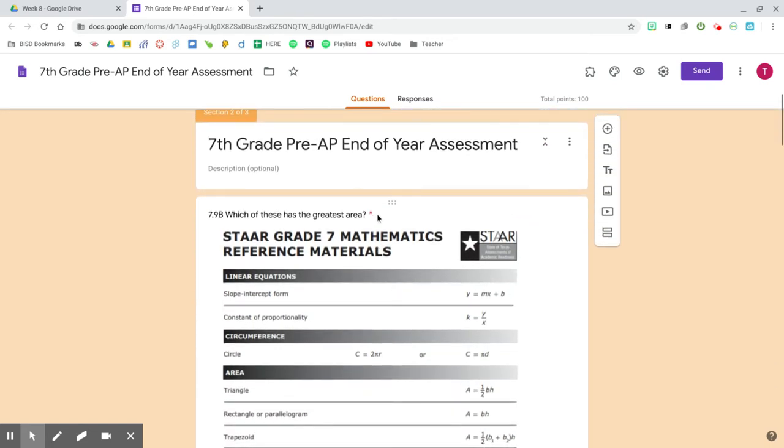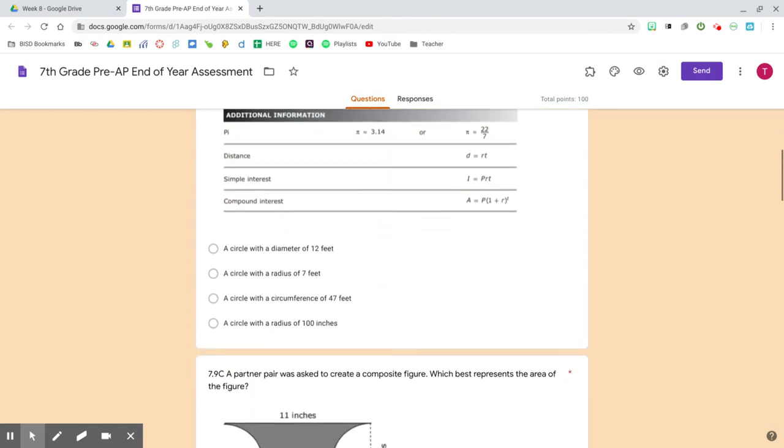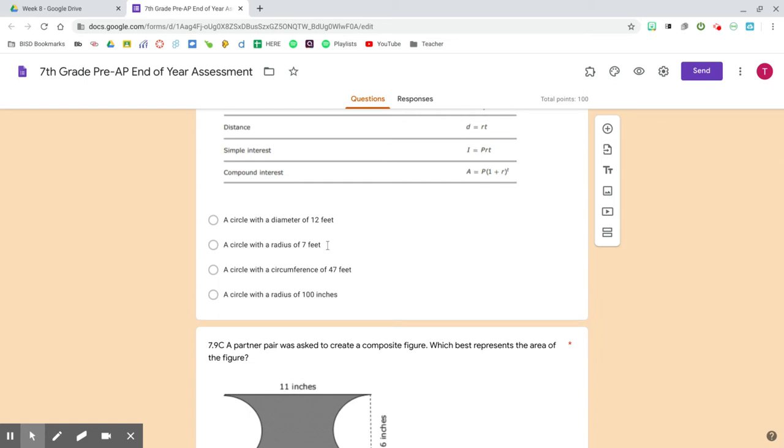Question 1. Which of these has the greatest area? A circle with a diameter of 12 feet, a circle with a radius of 7 feet, a circle with a circumference of 47 feet, a circle with a radius of 100 inches.